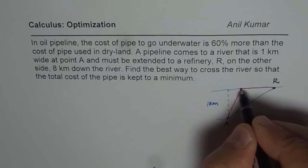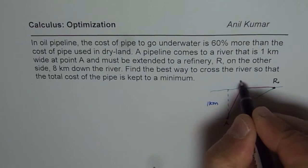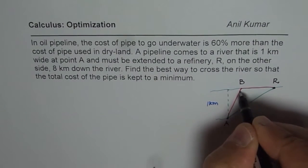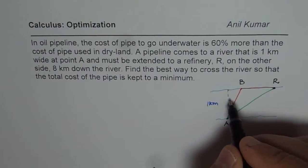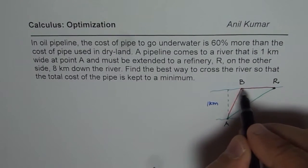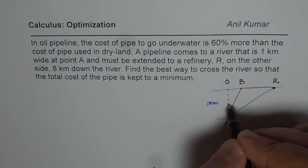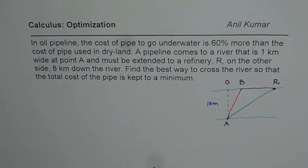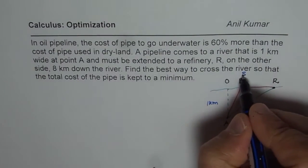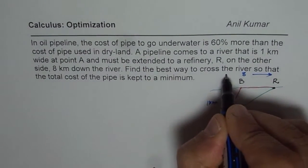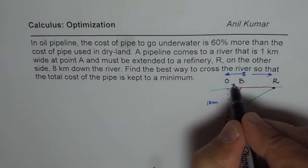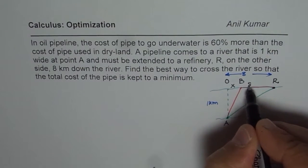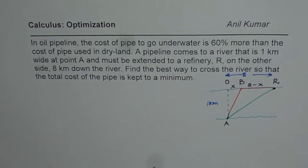Let us say that the pipe is laid diagonally to point B and then run to R along the ground. Since we have this dimension as 1 km and this point is O directly opposite, O to R is 8 km.